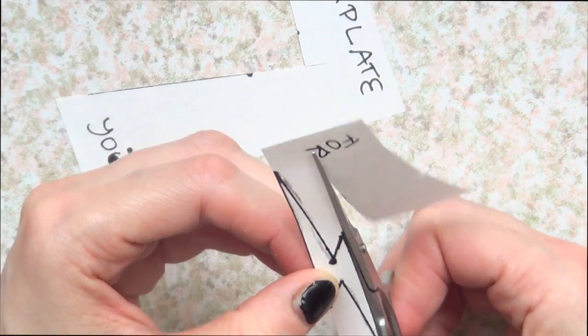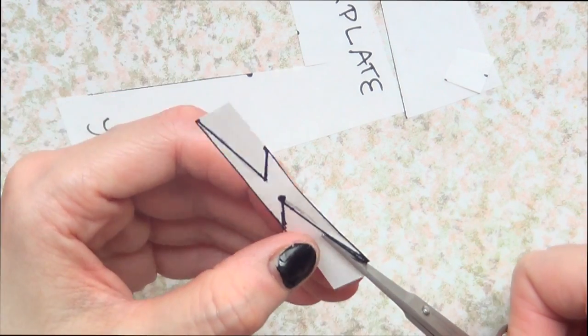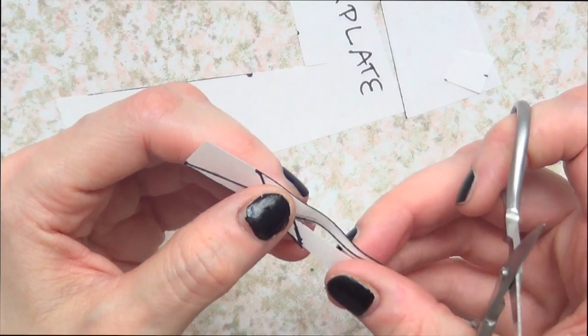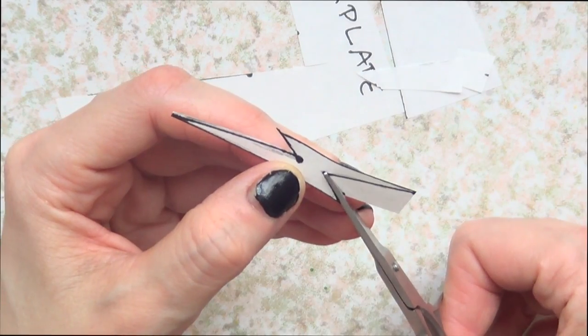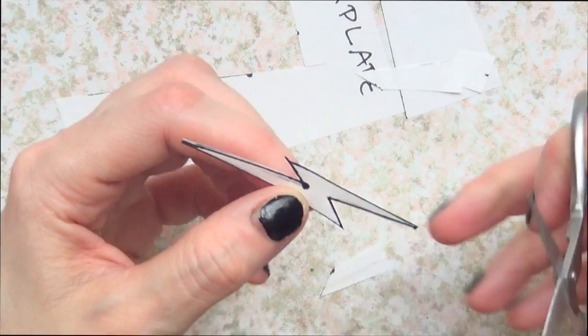I would highly suggest you just use the template because it's going to be easier. The shape looks simple, but once you're doing it, it's a bit tricky because simple things tend to be that way—they look simple but are not as simple to make. I'm just going to cut my template using scissors.